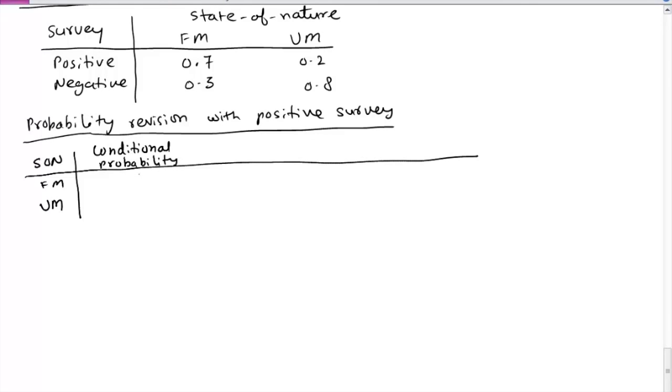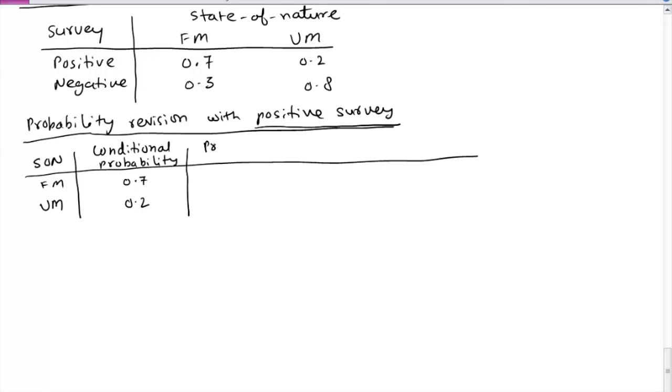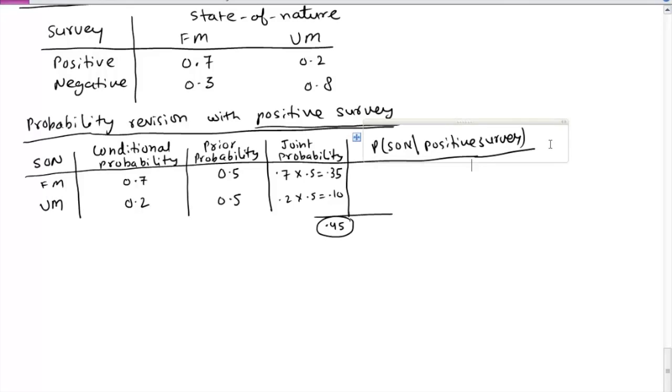To figure out whether we should go for a survey or not we can do some further calculations. Conditional probability. So I am getting this data from the top table, 0.7, 0.2. So we are talking about a positive survey and these are the probabilities you can see at the top also. You can also write down prior probability. We started with 0.5 each in the previous problems. And then we can calculate joint probability. This is a very standard calculation. You multiply 0.7 times 0.5 is 0.35. The last column is probability of the nature given a positive survey. So what is the probability that it will be a favorable market given a positive survey, 0.45 to 0.22. So these are the revised probabilities.